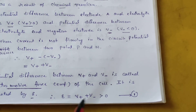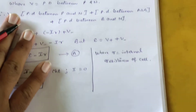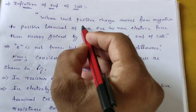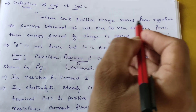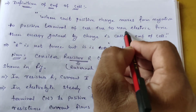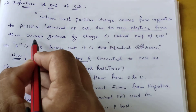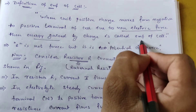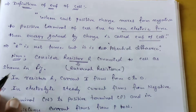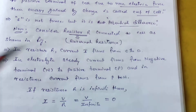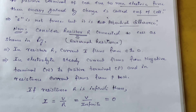This potential difference through the cell is called electromotive force, indicated by epsilon. The definition of EMF is: when a unit positive charge moves from the negative to the positive terminal of a cell due to non-electrical force, the energy gained by the charge is called the EMF of the cell. Remember, EMF is not a force — it is a potential difference.